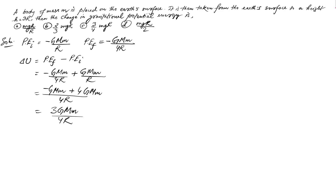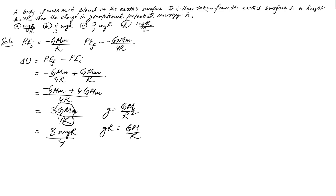Checking the options, the answer is not in the form of capital G and M — we need to convert it. We know that acceleration due to gravity g equals GM/R², so gR equals GM/R. Replacing GM/R with gR, we get 3mgR/4. Checking the options, option C is correct: 3mgR/4.